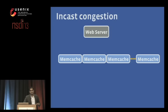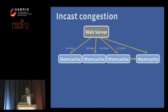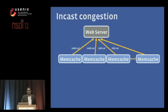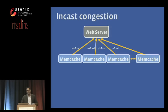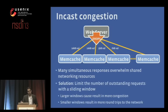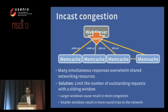One of these problems is what's termed incast congestion. We issue a wide parallel fetch to many servers; memcached thinks for a couple of microseconds and returns the value. When all the values come back to the web server, they overwhelm shared networking resources at the client side — not the server side — and you start to see packet drops. Our solution is a simple sliding window protocol that limits the number of outstanding messages. Larger windows cause more congestion; smaller windows result in more round trips. There is a sweet spot, and I encourage you to read our paper about it.